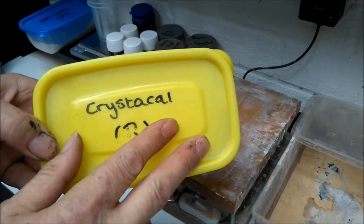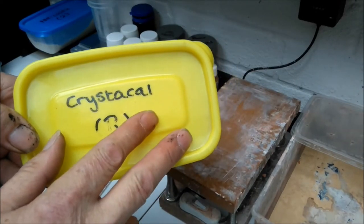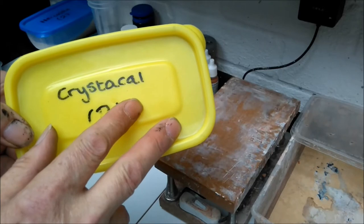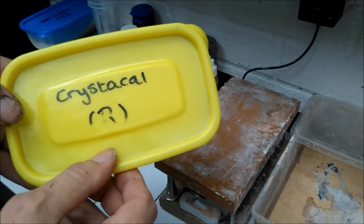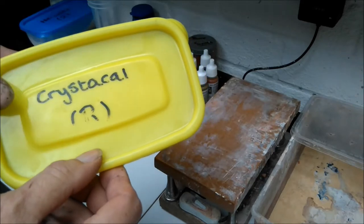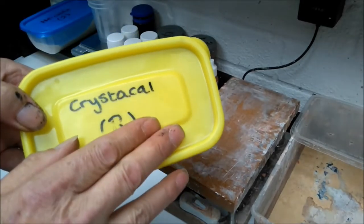This is Crystallite R, a porcelain finish plaster which is extremely hard. I use this for more delicate pieces like tiles, slates, and little things like that. They're both good quality casting powders.